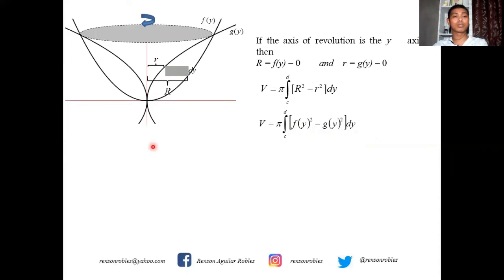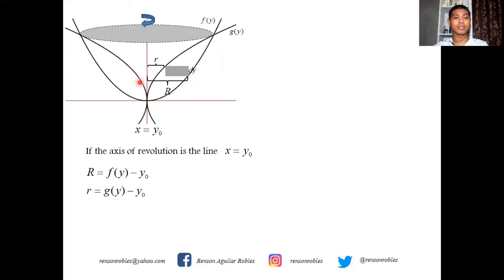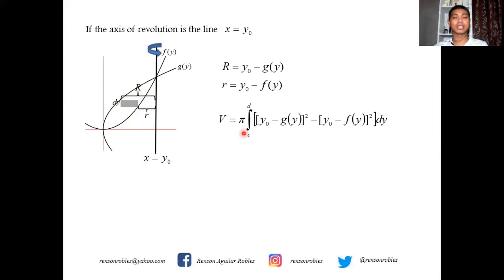If the vertical axis of revolution is not the y-axis but the line x = y₀, then R = f(y) − y₀ and r = g(y) − y₀. If the axis is to the right of the region, then r = y₀ − f(y) and R = y₀ − g(y), so: V = π ∫[C to D] [(y₀ − g(y))² − (y₀ − f(y))²] dy.